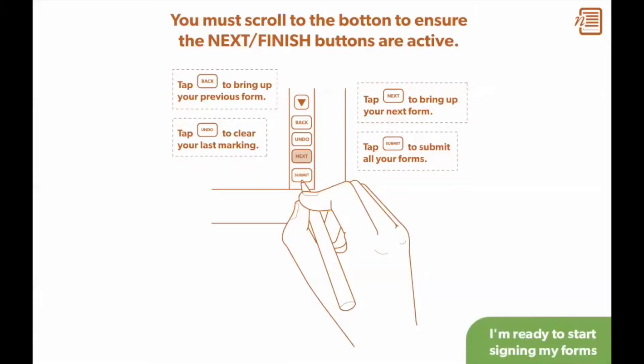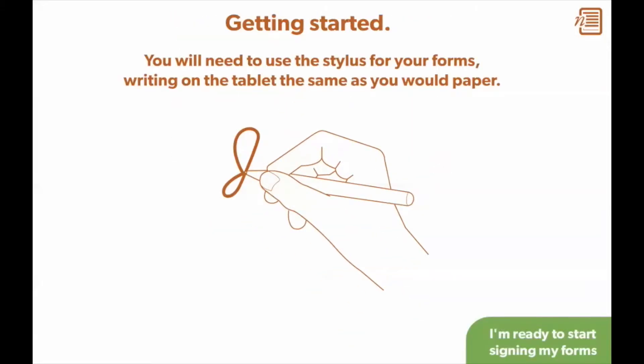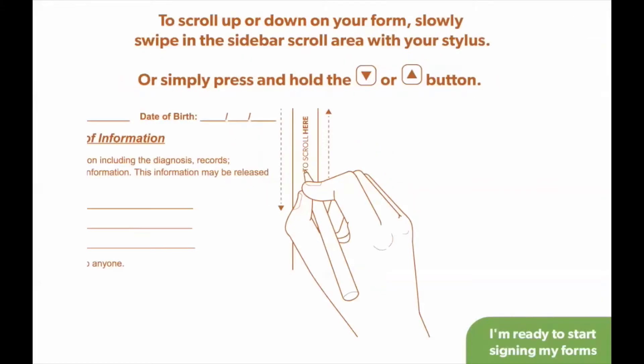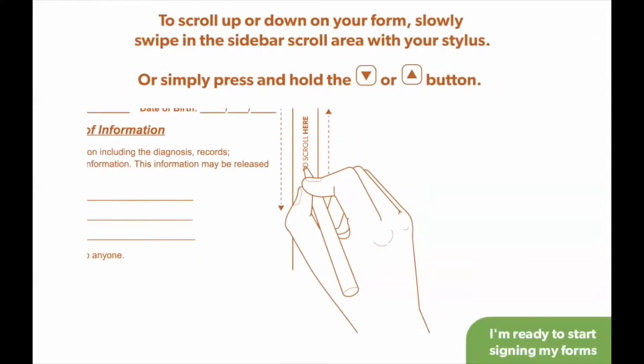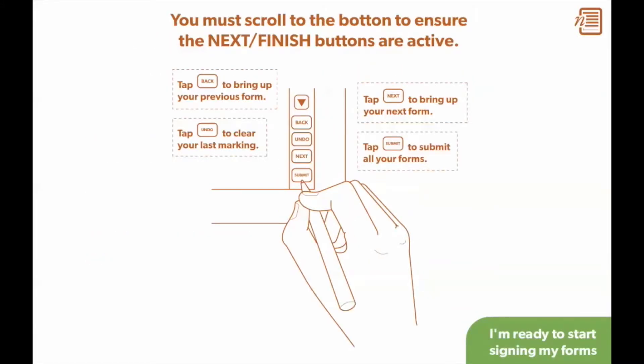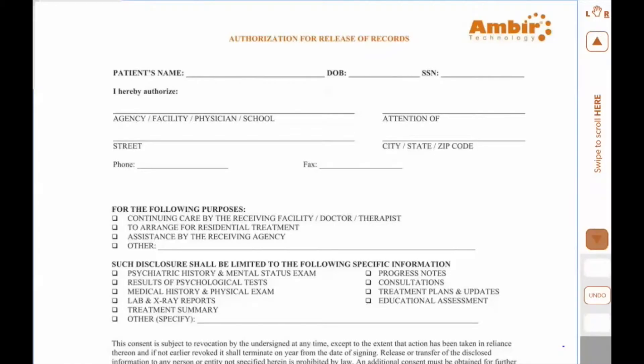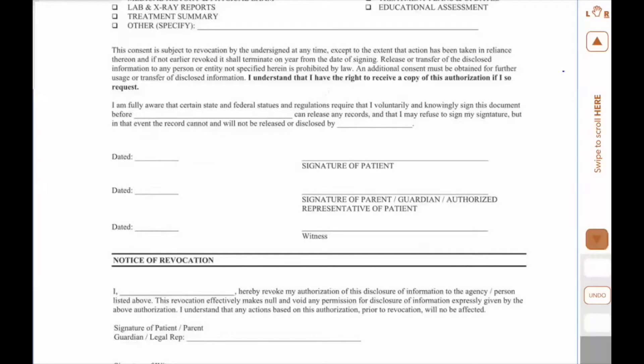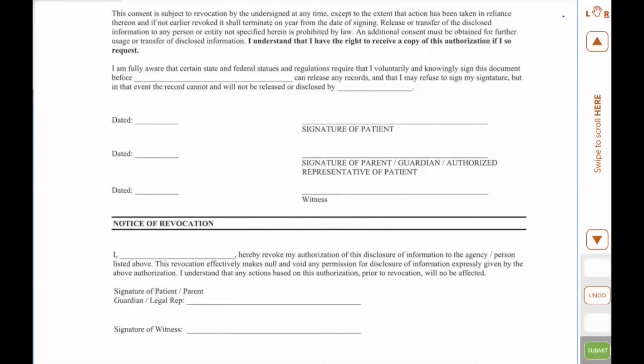When the form is first sent to the tablet, the first thing you notice are the instruction screens that come up. This leads you through signing a form. And when you're ready to start signing the form, you can simply click on ready to start signing my form. You fill in the form, and I'm going to just scroll through this form here. And you'll notice when I get down to the bottom of the form, the green submit button gets activated. That button is not activated until you get to the very bottom of the form to make sure that the client sees the complete form.